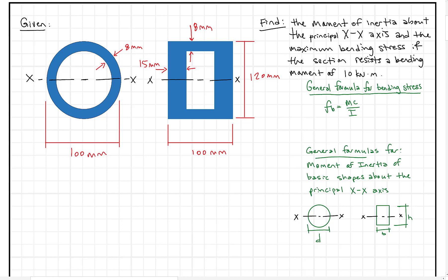This is the first video in a series on bending stress and moment of inertia, starting with the basics. We have two shapes, and we're told to first find the moment of inertia about the principal XX axis — the middle line axis that passes right through the center of gravity of the shape.